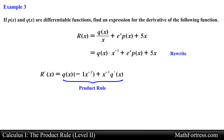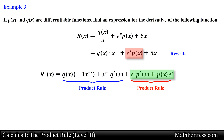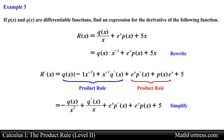Next we move along and find the derivative of the second term. Here we also have a product of two functions: the natural exponential function times p. So we apply the product rule with e to the x as our first function and p as our second function. Lastly, the derivative of 5x is just equal to 5. Simplifying and rearranging the terms, we obtain the final expression for the derivative: negative q over x squared plus q' over x plus e to the x times p' plus e to the x times p plus 5.